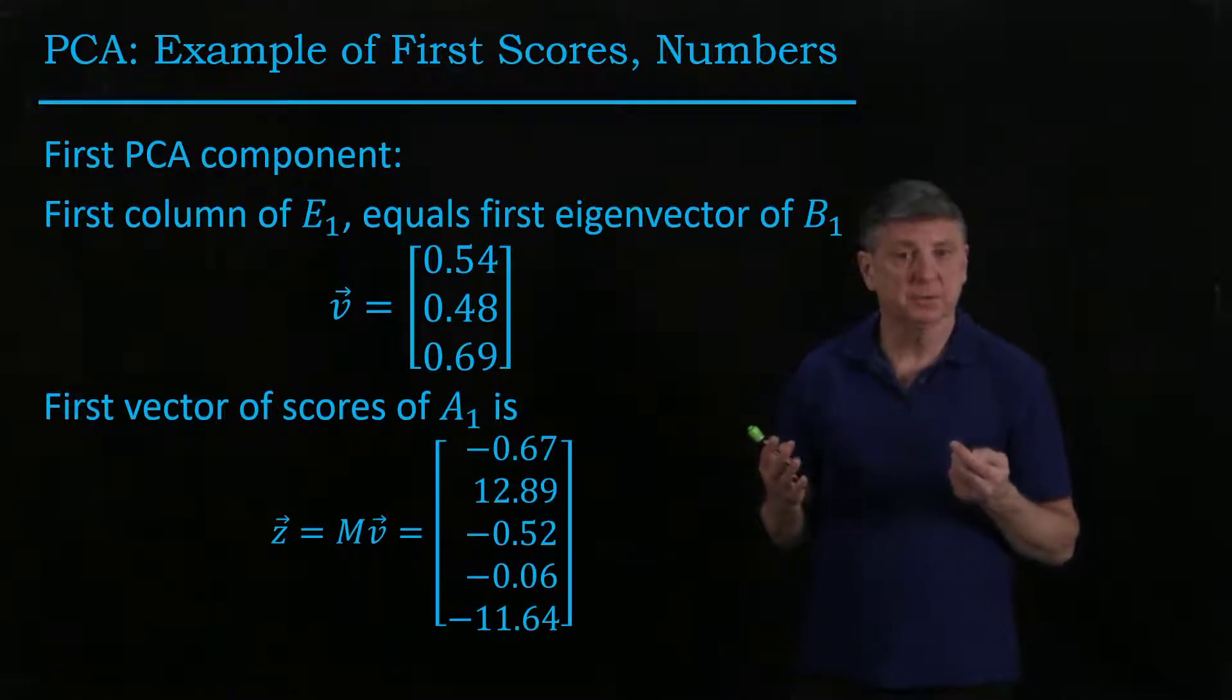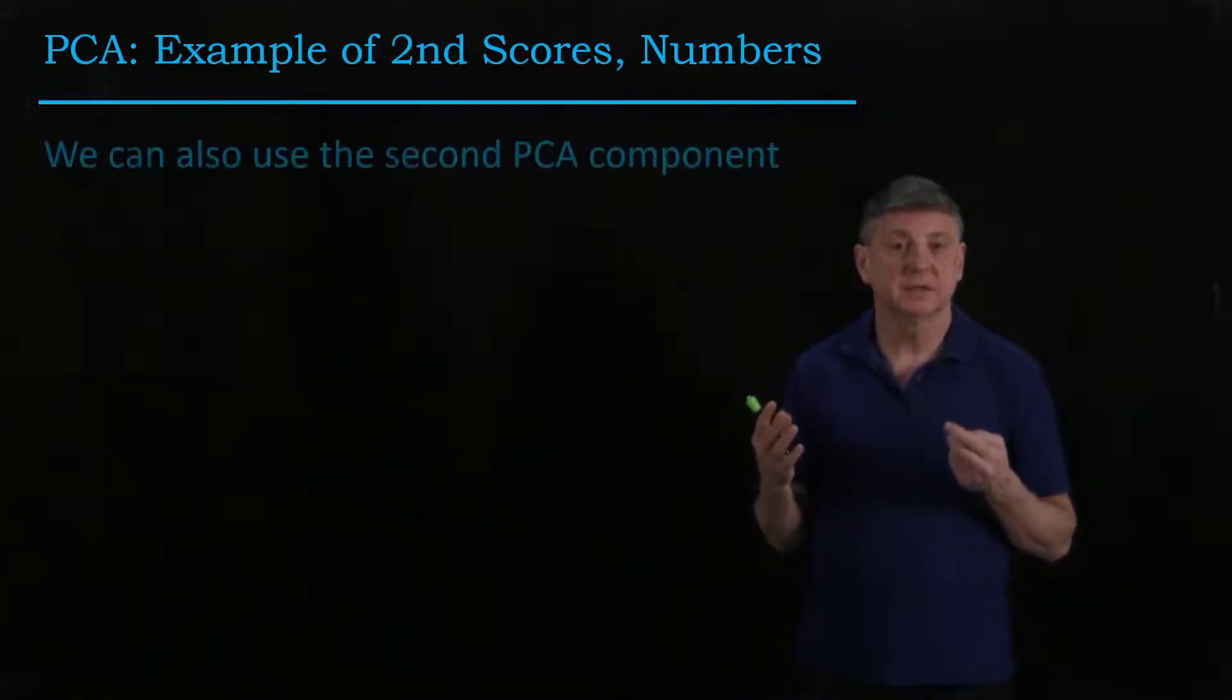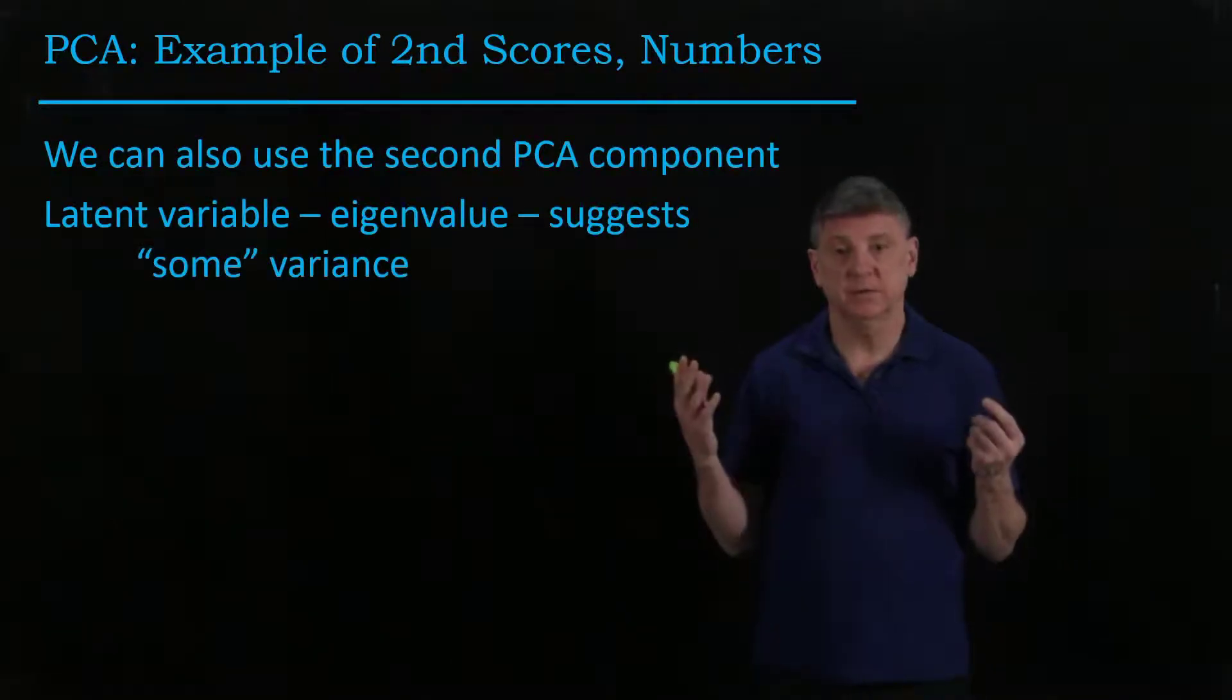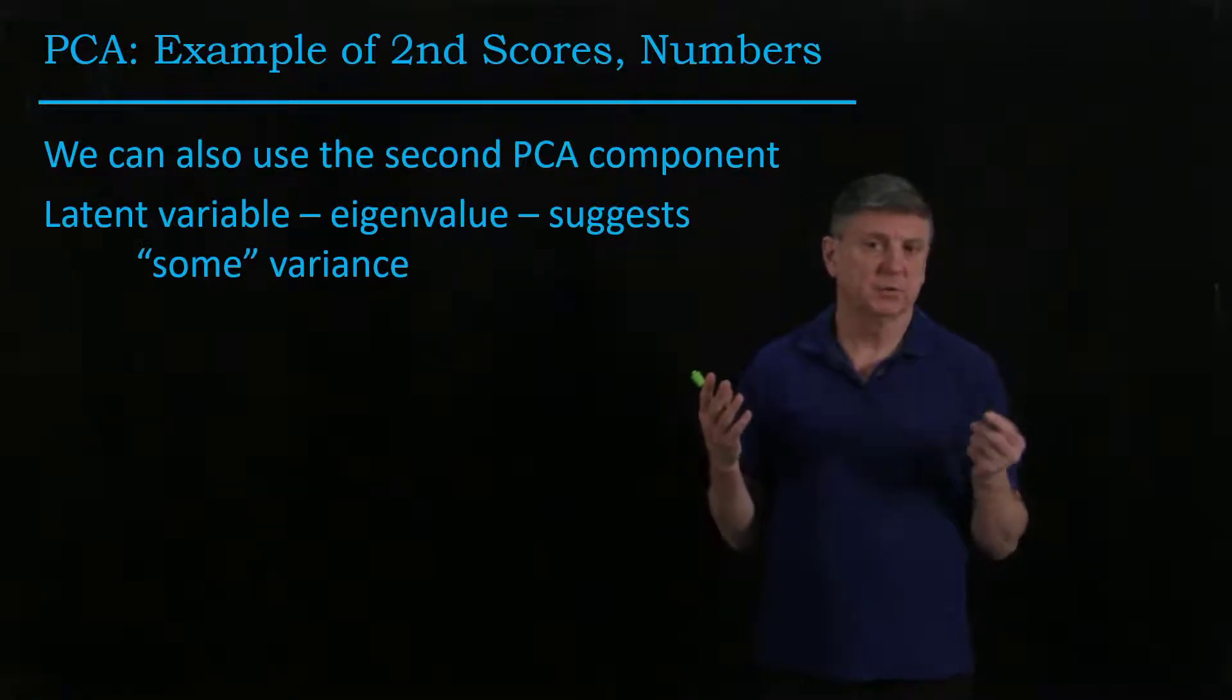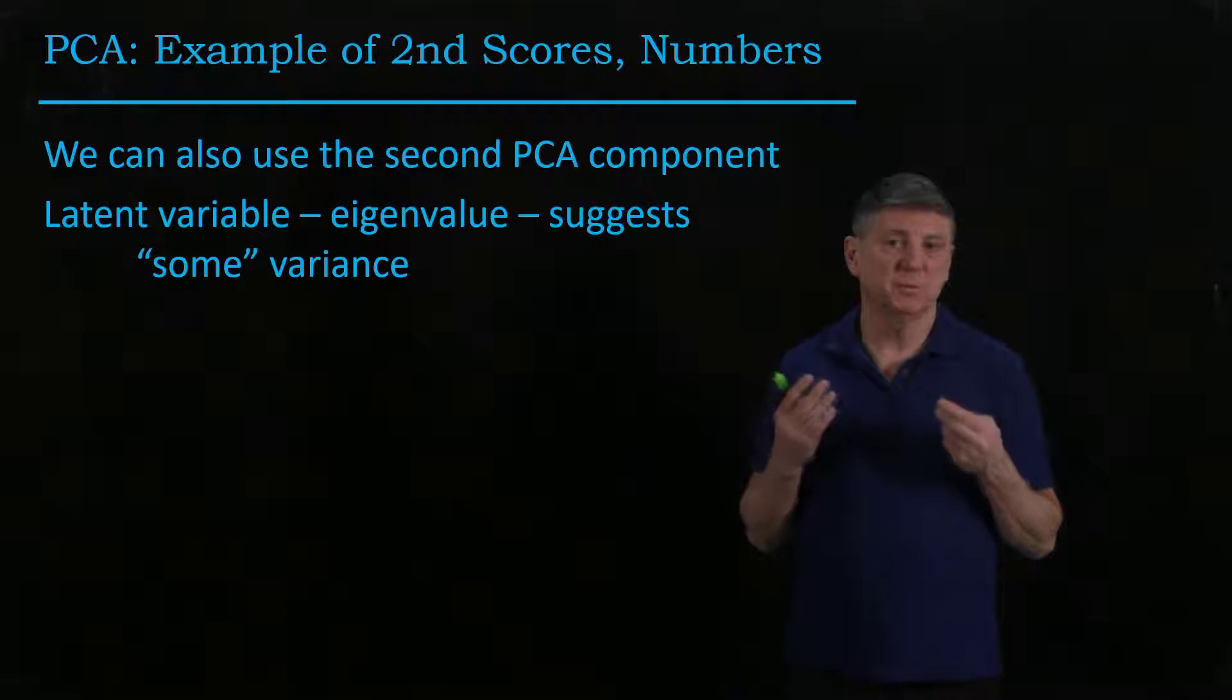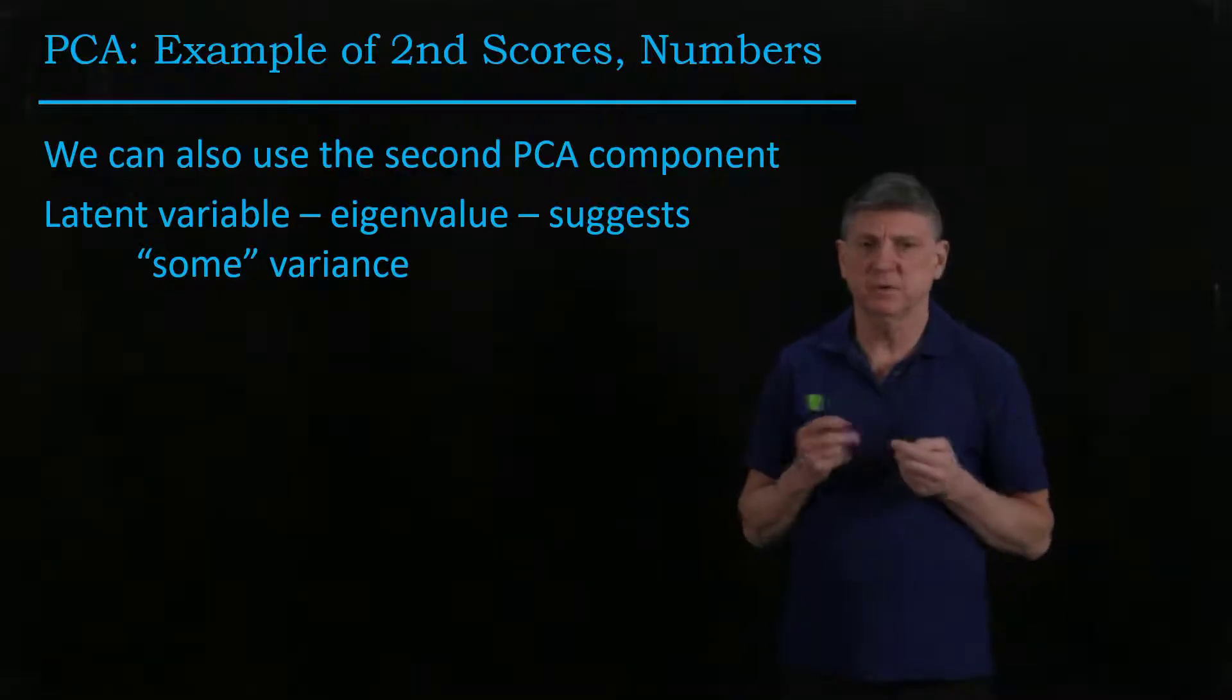We could repeat this process using the second score, using the second PCA component or second loading vector. The latent variable, which was the eigenvalue, in a previous session we found it might contain some variance, but we really weren't sure.